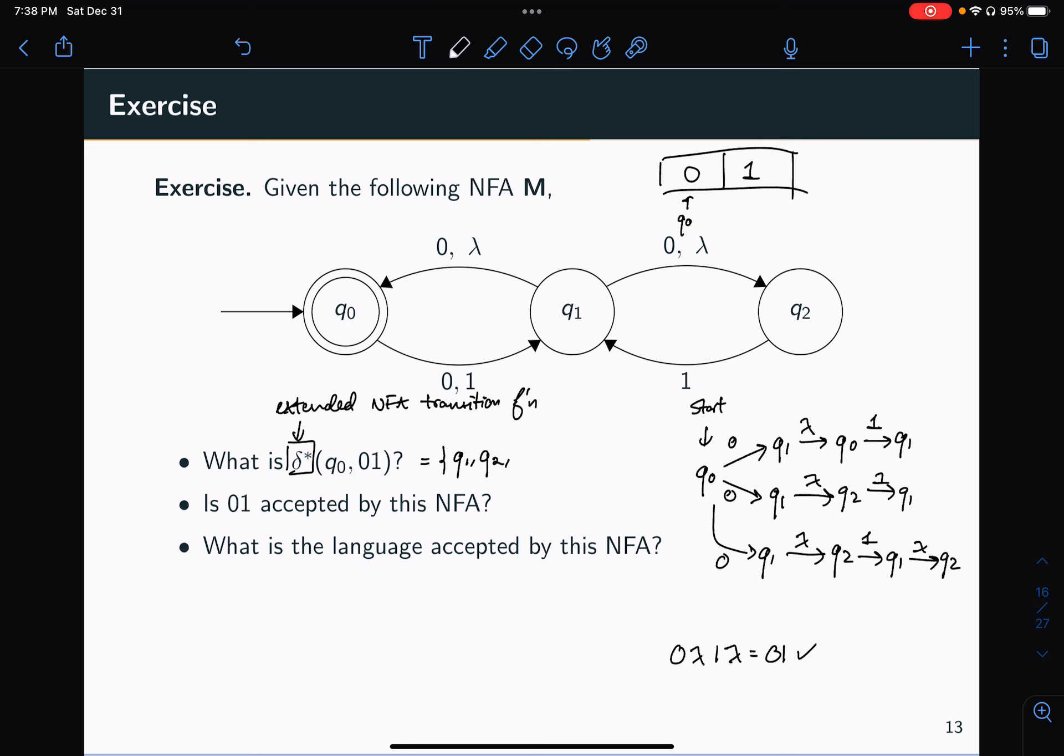The other place that I could go to is instead of using the lambda transition here, I could have used this lambda transition to go back to Q0. And so here, instead of going from Q1 to Q2 with the lambda transition, I could go from Q1 to Q0 with the lambda transition. And again, this represents a computation for zero one, because zero lambda one lambda is equal to zero one. And so the other state that I could also reach will be Q0.